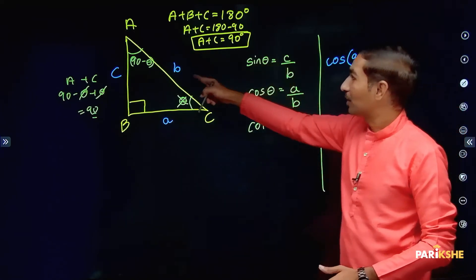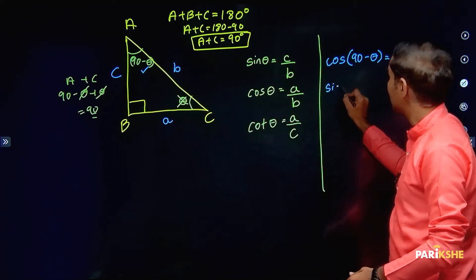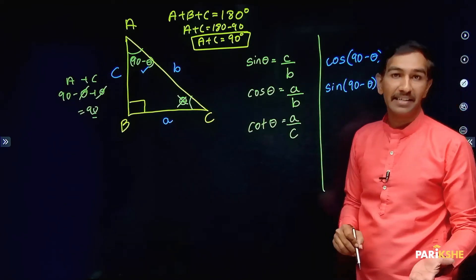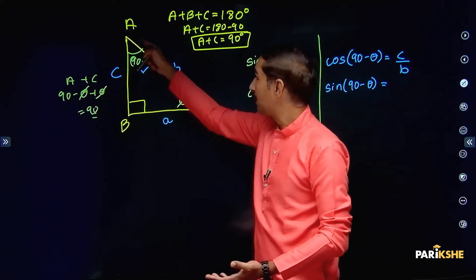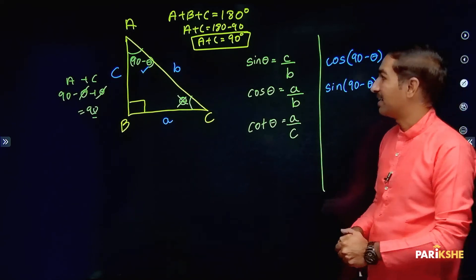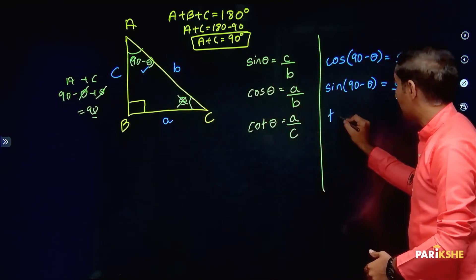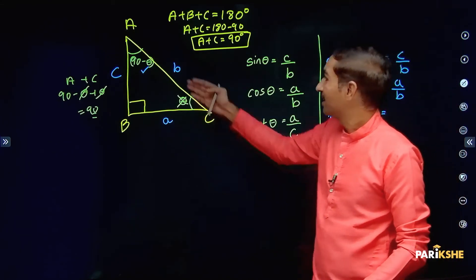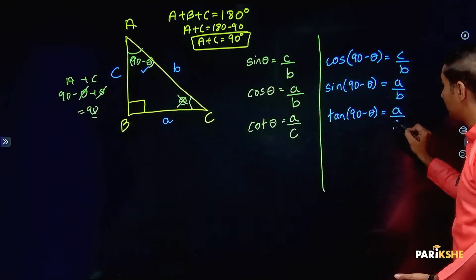Now taking sin(90 minus theta): sin equals opposite by hypotenuse. For angle A, the opposite side is A and hypotenuse is B, so sin(90 minus theta) equals A by B. Similarly, tan(90 minus theta): opposite by adjacent gives A by C.